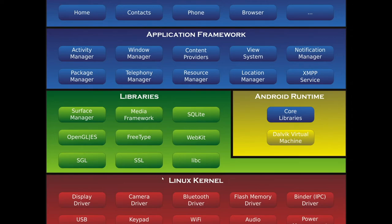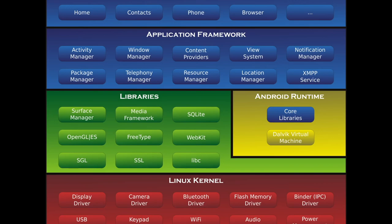To give a quick review: the kernel mainly consists of drivers and assemblers and manages low-level operations. Libraries handle different types of data. On top of the libraries is the Android Runtime, or ART, which consists of two components — core libraries for Java and Kotlin, and the Dalvik Virtual Machine that creates a separate virtual machine for each application. On top of ART is the Application Framework, which consists of APIs written by Android developers to help application developers write code more easily.